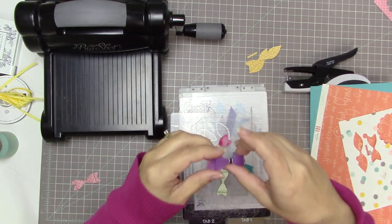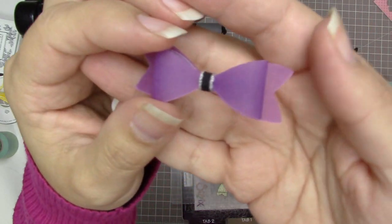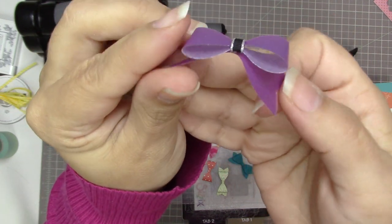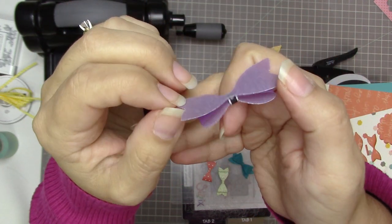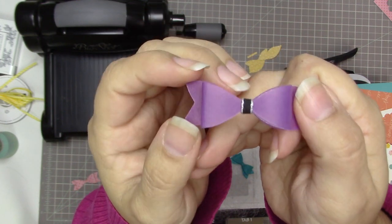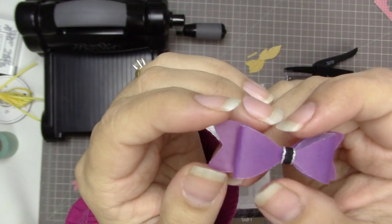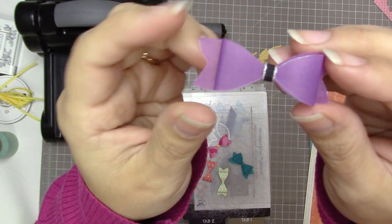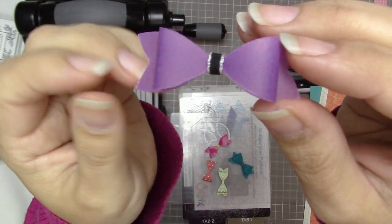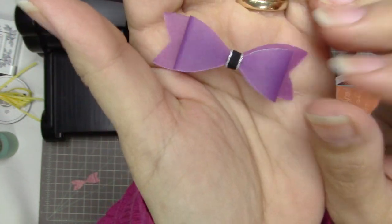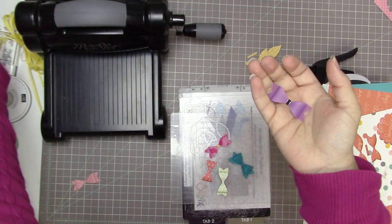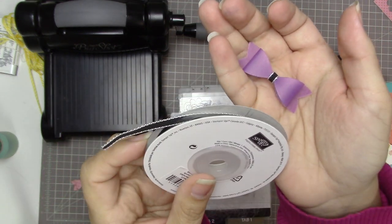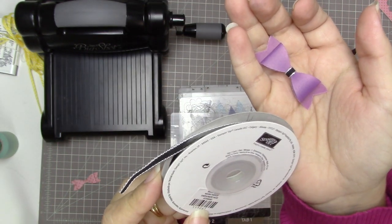This one I cut out of a piece of vellum, but it was thick vellum so it wasn't all that see-through. It was just in my stash, I don't know where it came from. Instead of using the center strip that the die comes with, I just used a piece of skinny ribbon on this one. The ribbon I used is from Stampin' Up, it looks like this. I think it's one-eighth of an inch.